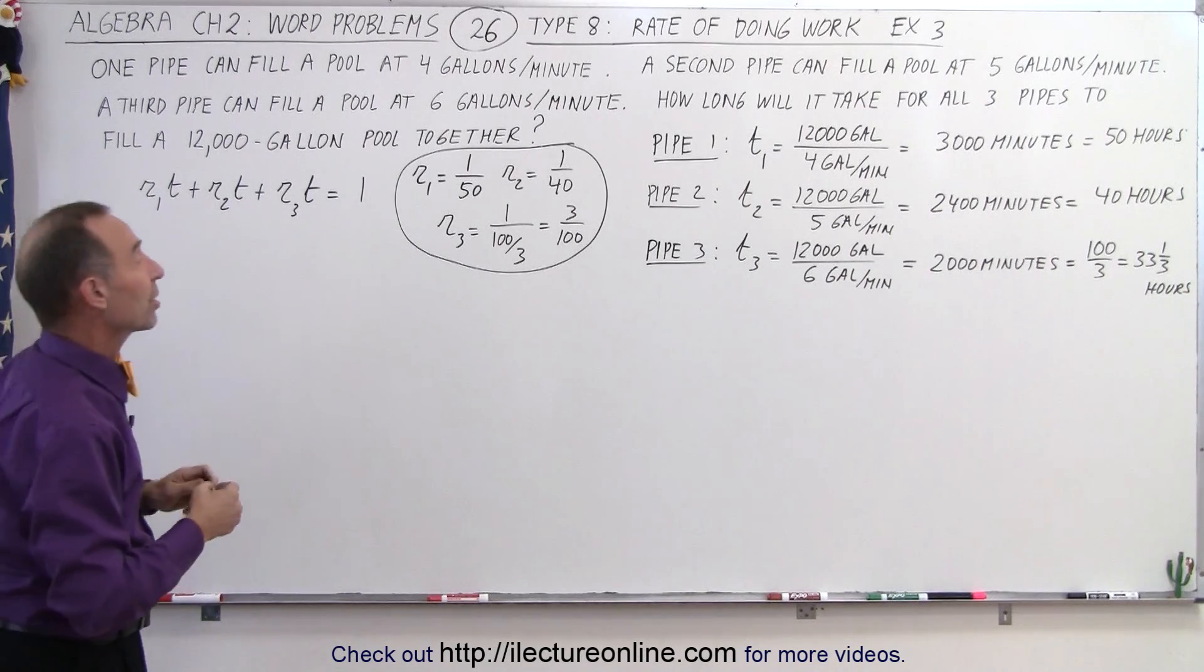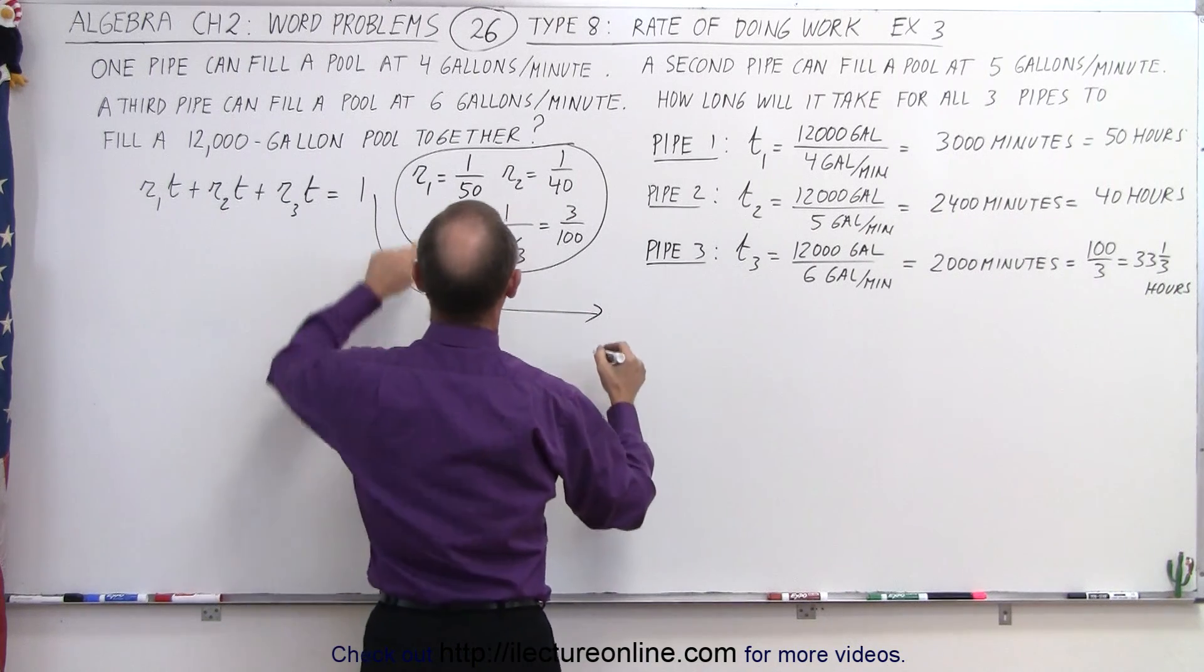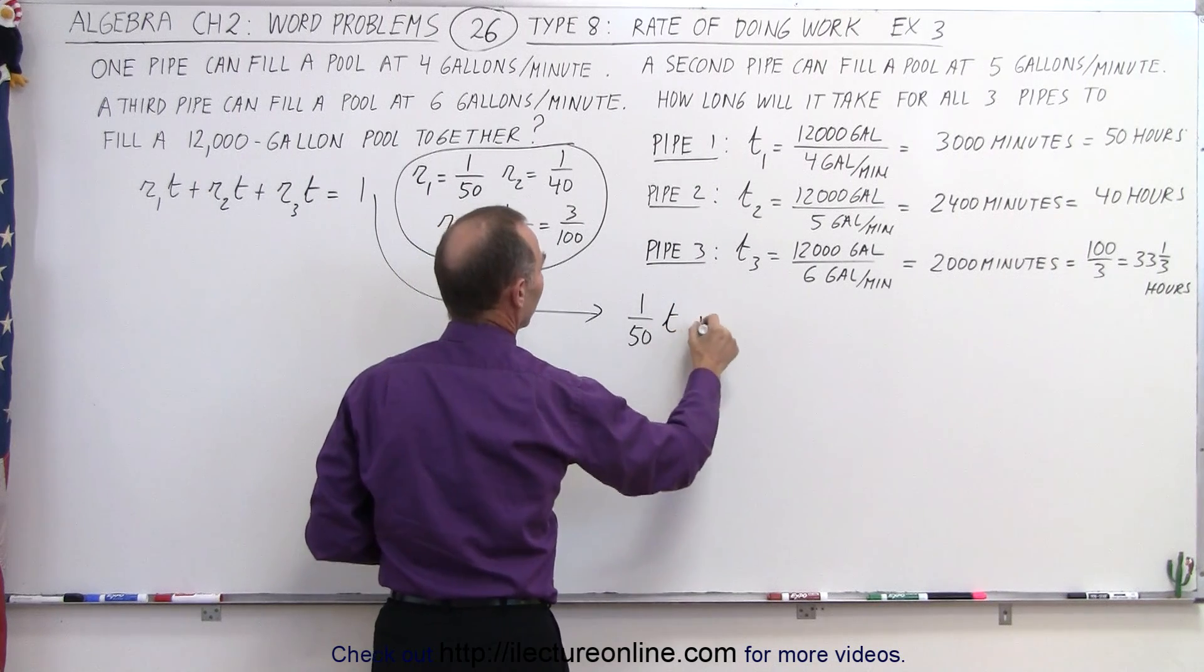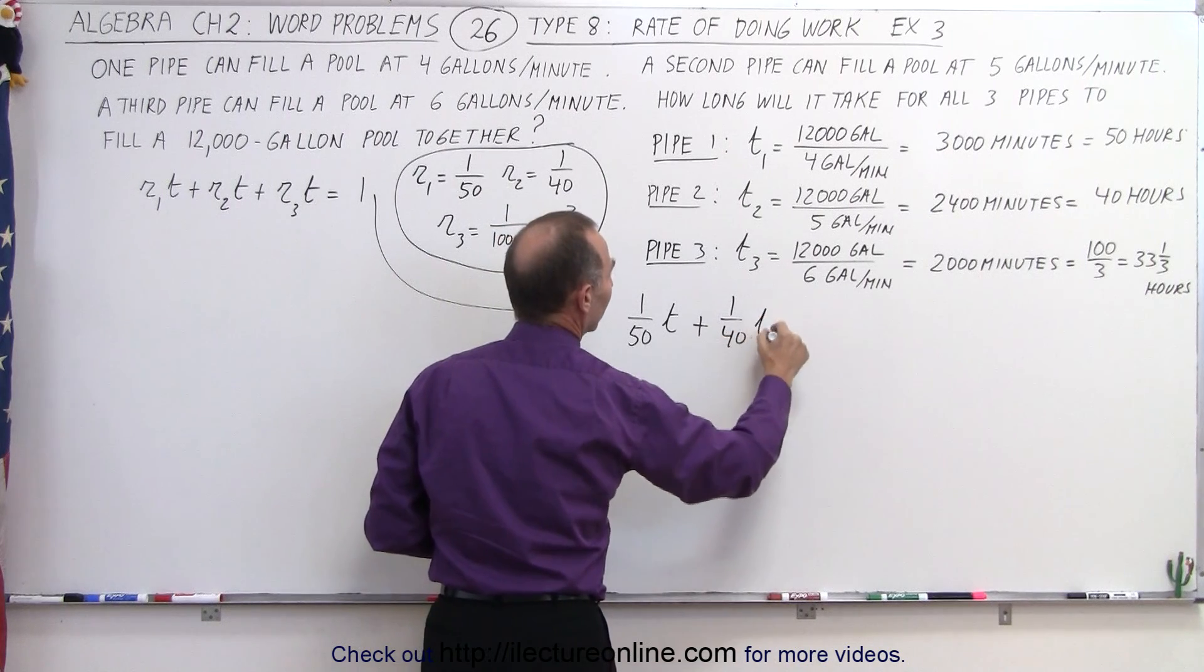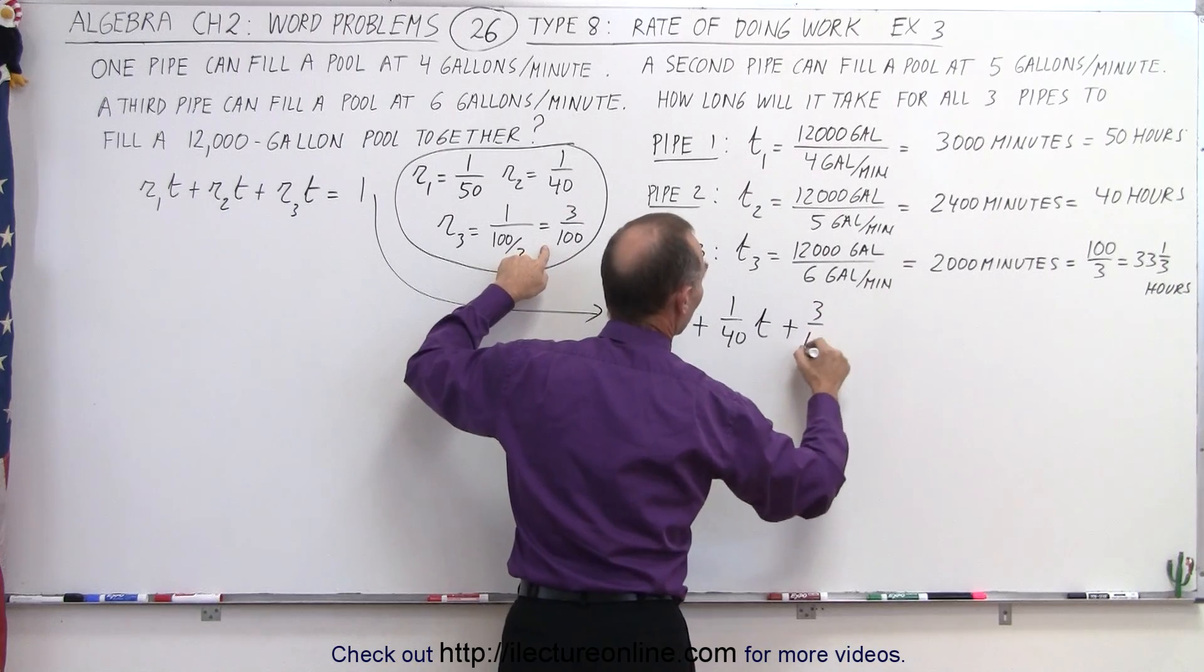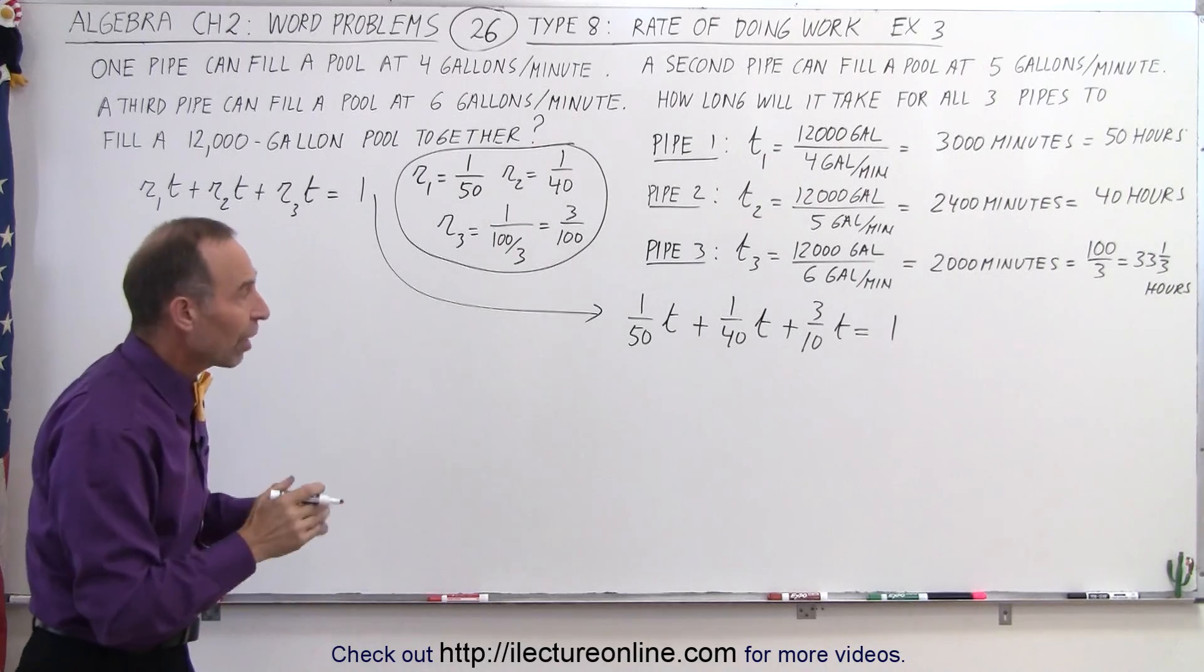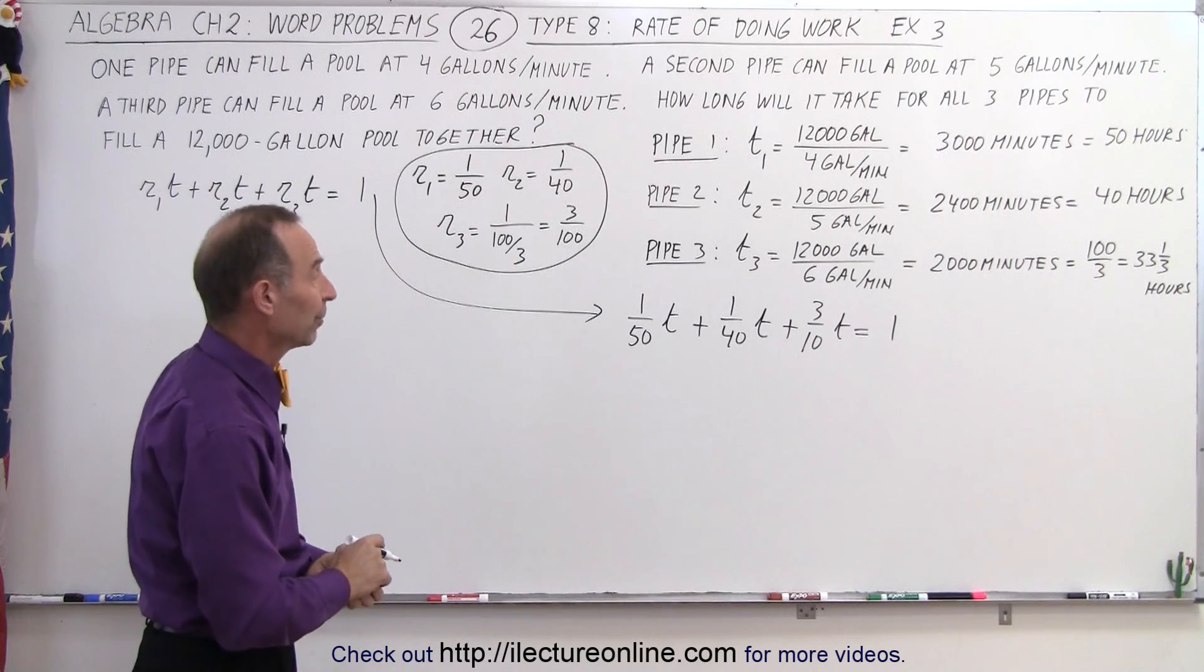Now we're going to plug that into the equation here, and now we can start solving for time. So rate 1 would be 1/50th of a pool in an hour times the total time that they work together, plus rate 2, which would be 1/40th of a pool per hour times the time, plus the third rate would be 3/100 times t. And when they all work together, all three pipes, they can do the whole job in t amount of time. Now we just have to find what t is equal to.